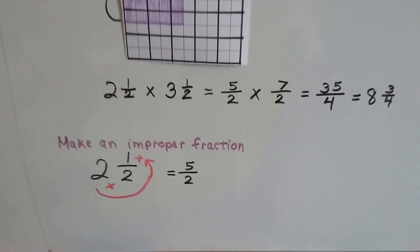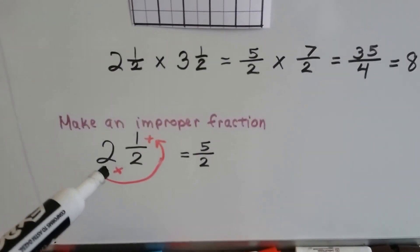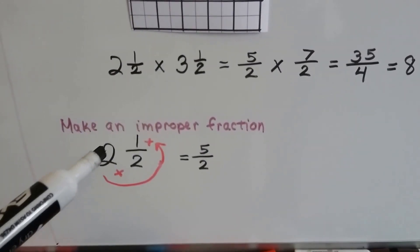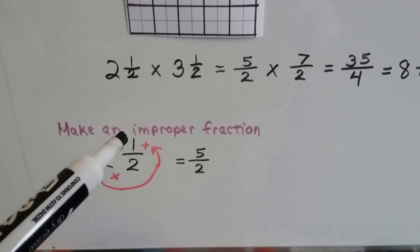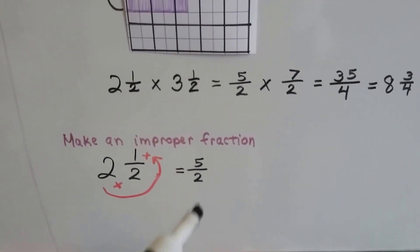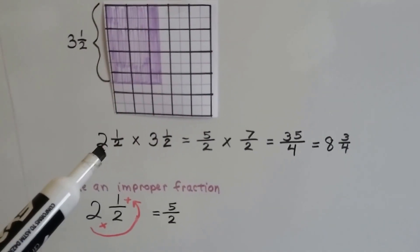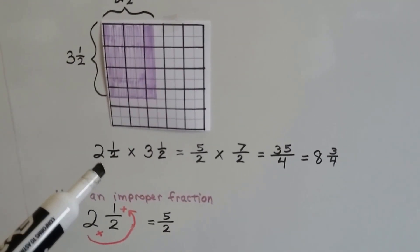So remember how to make an improper fraction. We just come around counterclockwise. We go two times two plus the one. So we get five halves. So what we can do is change these whole numbers into improper fractions.